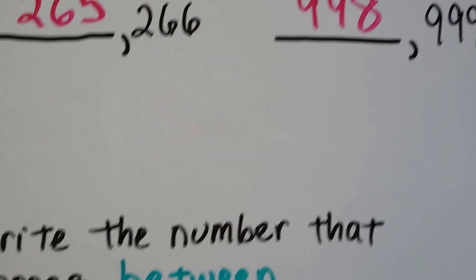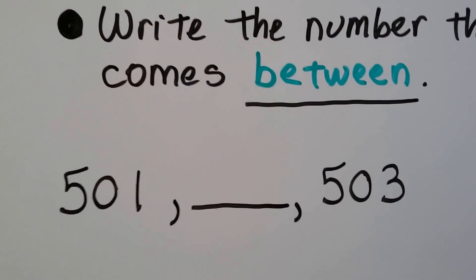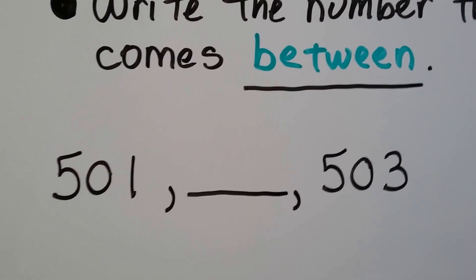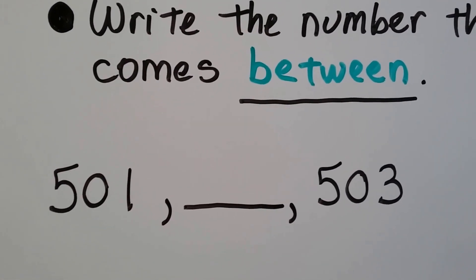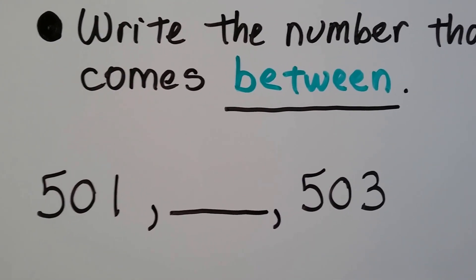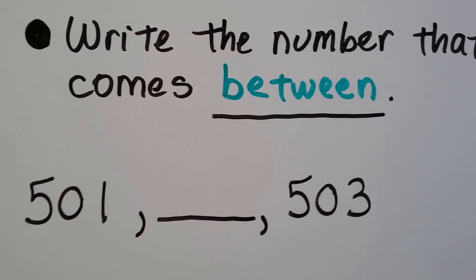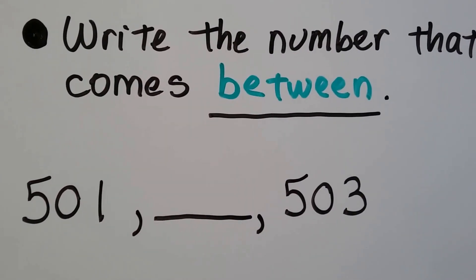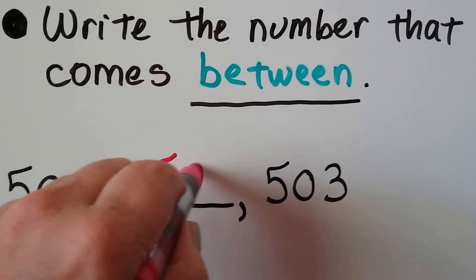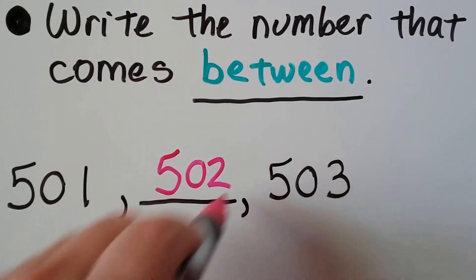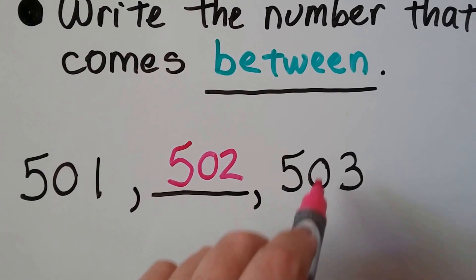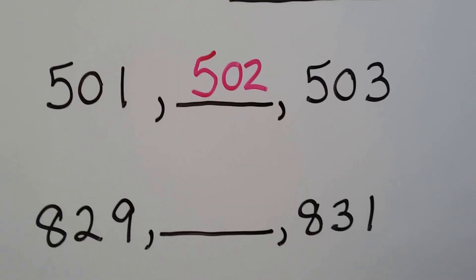Now let's write the number that comes between. What comes between 501 and 503? Do you know what the missing number is? If you said 502, you're right. 501, 502, 503 — we're counting.